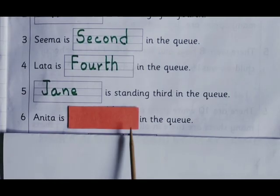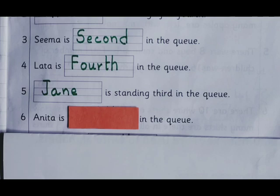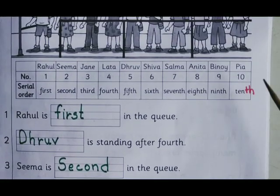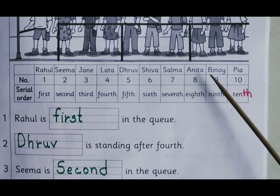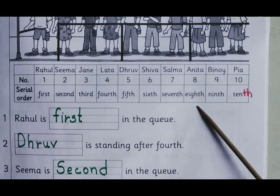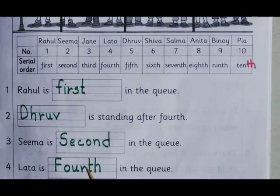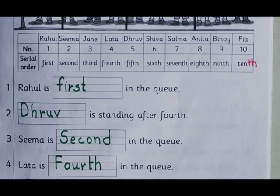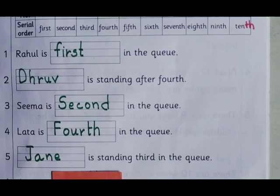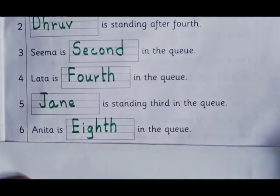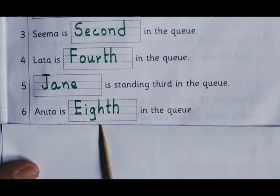Anitta is dash in the queue. Anitta — 8th. Anitta is 8th in the queue.